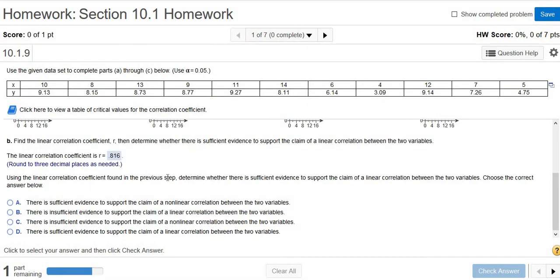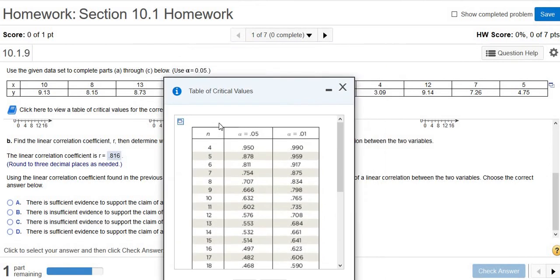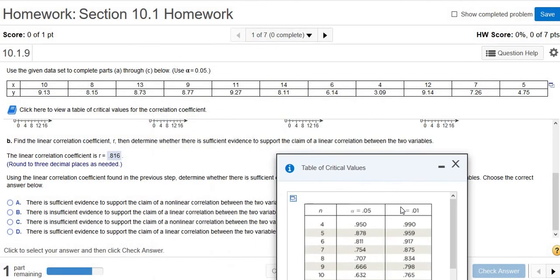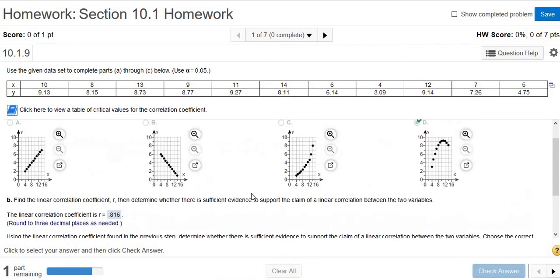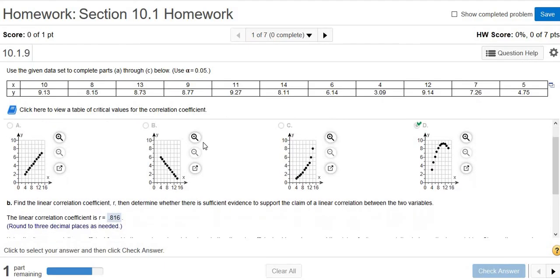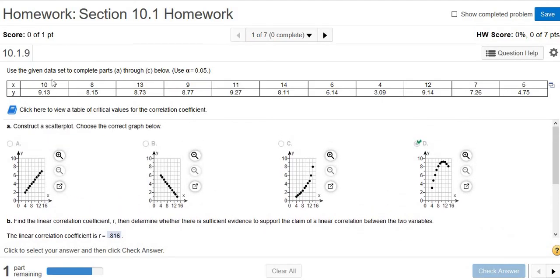Use the linear correlation coefficient found in the previous step. Determine whether there is sufficient evidence to support the claim of a linear correlation between the two variables. In order to determine whether there is a straight line pattern mathematically, you have to look at something called the critical value. Once you find R, you click on this little box here and you get this table. How do you use this table? Well, you have an N and an alpha. So the alpha should be given somewhere in the problem. There it is up there. Alpha is 0.05. All right.